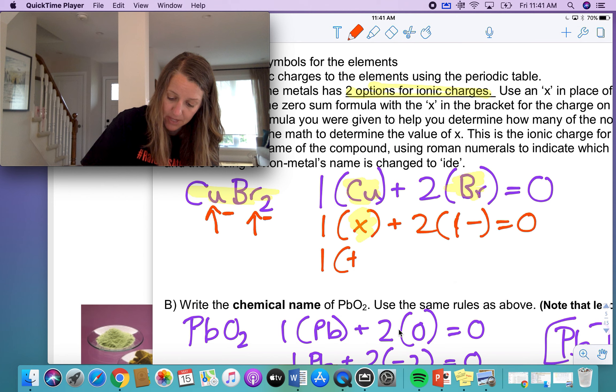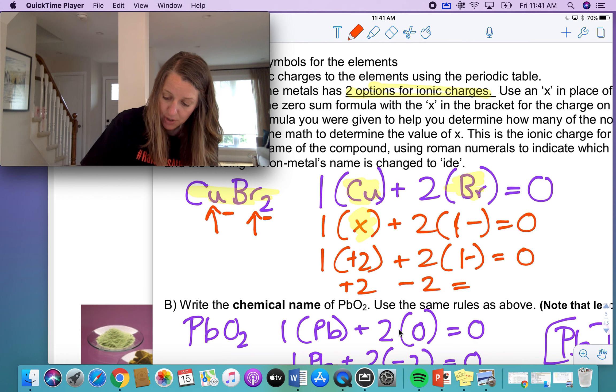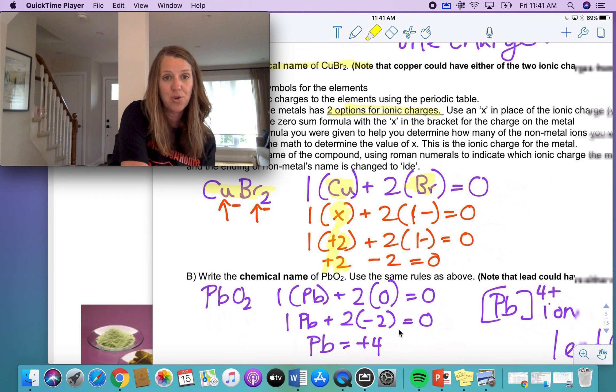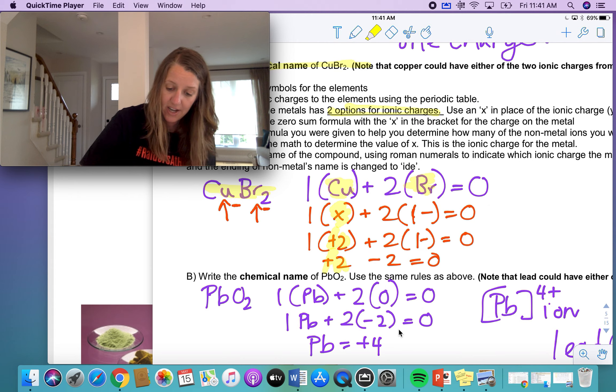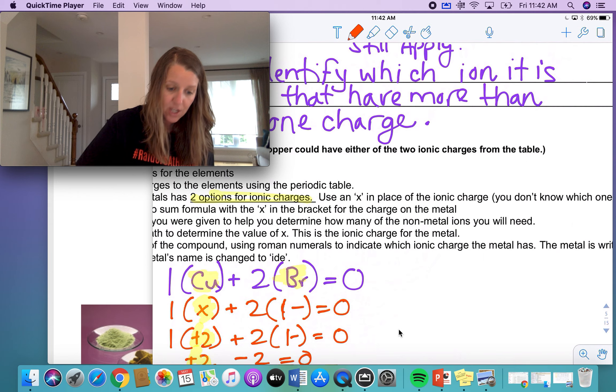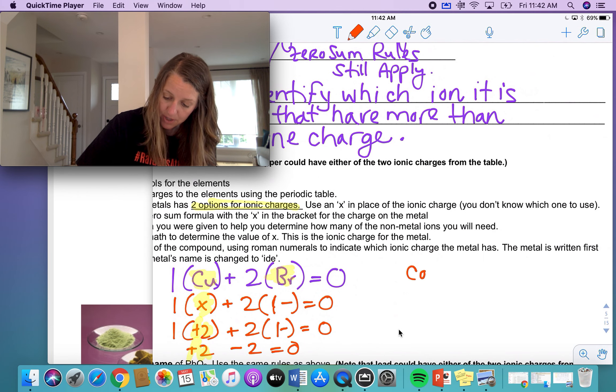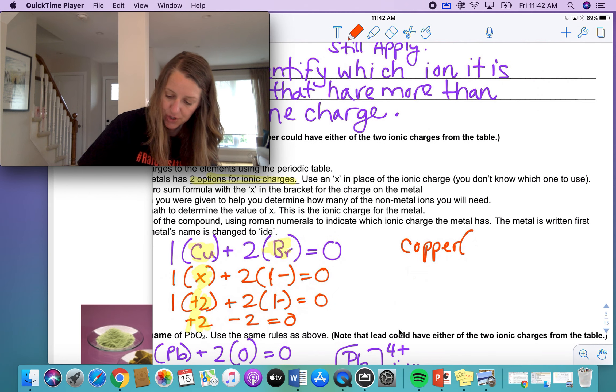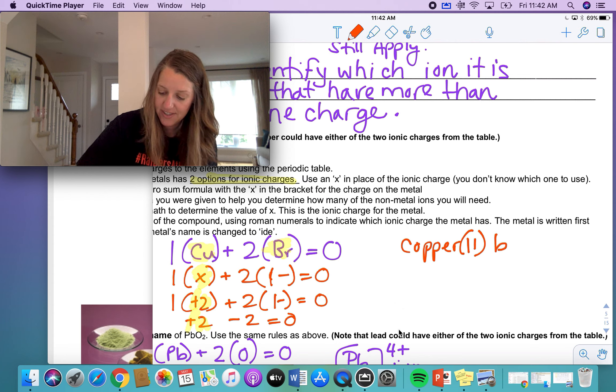Because if this is plus two and I have two things with a negative one charge, this is going to be negative two, what am I solving for? I'm solving for this number right here. And I'm trying to figure out what my ionic charge of copper is so that when I name the compound CuBr2, I'm going to call it copper. Notice there's no space between the copper and the ionic charge of the copper, which is two. That's the Roman numeral for it.